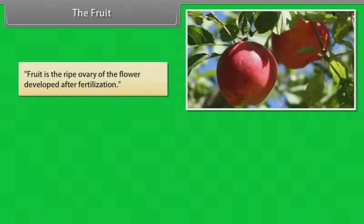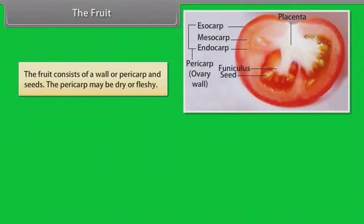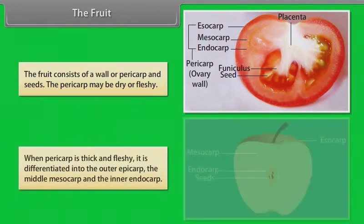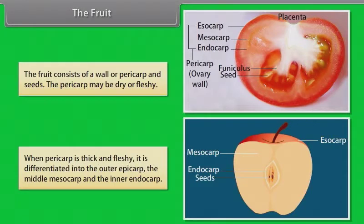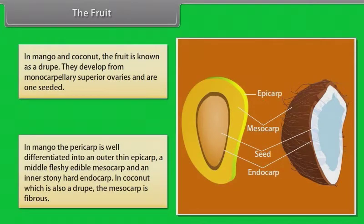Fruit is the ripe ovary of the flower developed after fertilization. If a fruit is formed without fertilization of the ovary, it is called a parthenocarpic fruit. The fruit consists of a wall, a pericarp and seeds. The pericarp may be dry or fleshy. When pericarp is thick and fleshy, it is differentiated into the outer epicarp, the middle mesocarp and the inner endocarp. In mango and coconut, the fruit is known as a drupe. They develop from monocarpellary superior ovaries and are one-seeded. In mango, the pericarp is well differentiated into an outer thin epicarp, a middle fleshy edible mesocarp and an inner stony hard endocarp. In coconut, which is also a drupe, the mesocarp is fibrous.